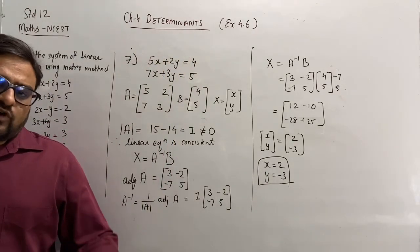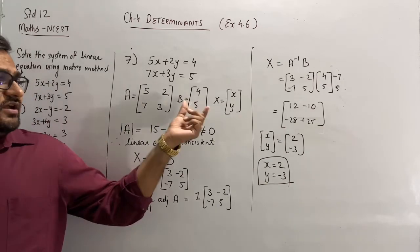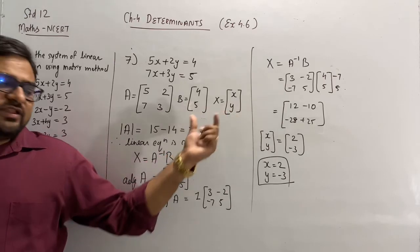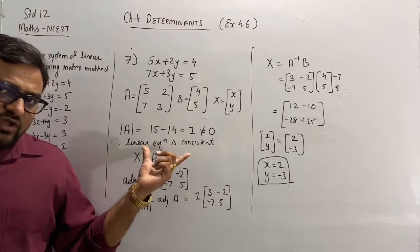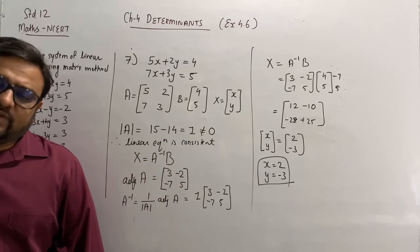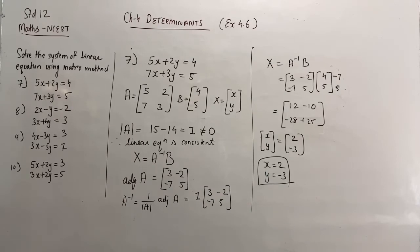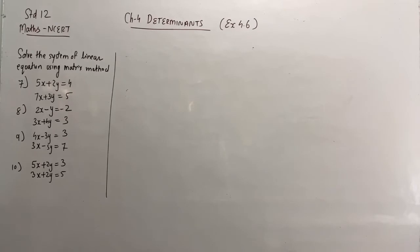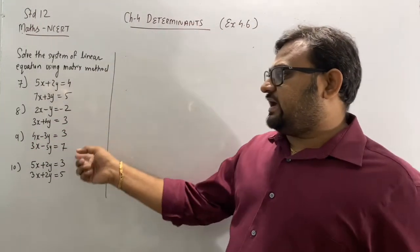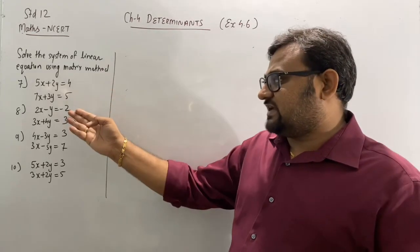So what do we have to do? First form the matrix using the coefficient, then using the constant term, and then variables. Then find out the consistency — the determinant value must not be equal to 0. Then use X equal to A inverse B. Note down question number 7. Now let's solve one more — let's solve the 10th one. 8th and 9th, you solve by yourself based on the method we did in 7.